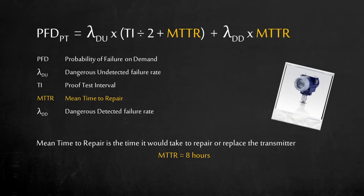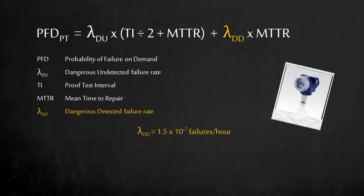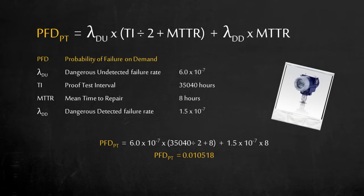The mean time to repair also depends on operations and maintenance. Let's say it would take the crew 8 hours to repair or replace the transmitter. The pressure transmitter has a dangerous detected failure rate of 15 failures per 1 million hours of operation. Now that we got all the variables, we can calculate the probability of failure on demand of the pressure transmitter, which is 0.010518, or about 1% chance in any given year.